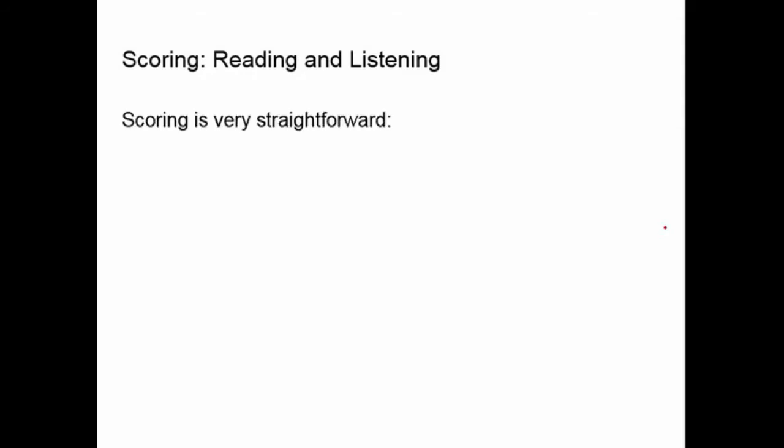Let's talk about specific sections and the scoring involved. On reading and listening sections, the scoring is very straightforward. You'll be filling in short answers and multiple-choice questions. Both sections — reading and listening — will always have 40 questions each, and your band score for listening and reading will just be the score you received out of 40.